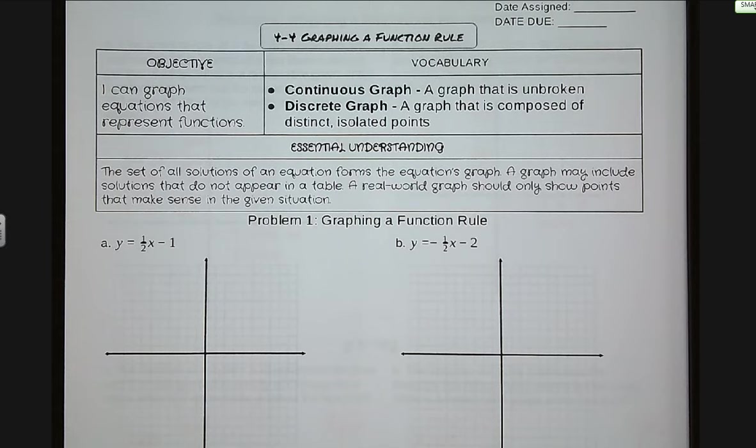Our new vocabulary words: we have continuous graph, that is a graph that is unbroken, and we have a discrete graph, which is a graph that is composed of distinct isolated points. Our essential understanding: the set of all solutions of an equation forms the equation's graph. A graph may include solutions that do not appear in a table. A real-world graph should only show points that make sense in that given situation.